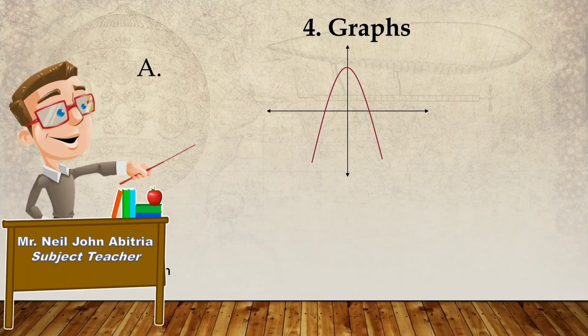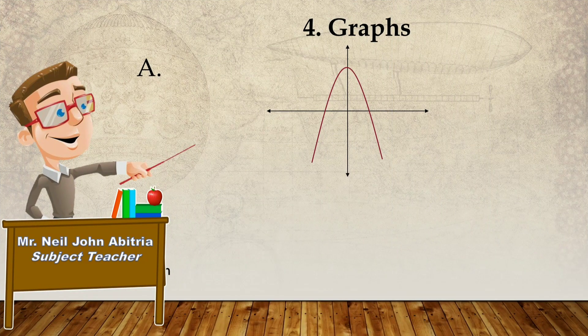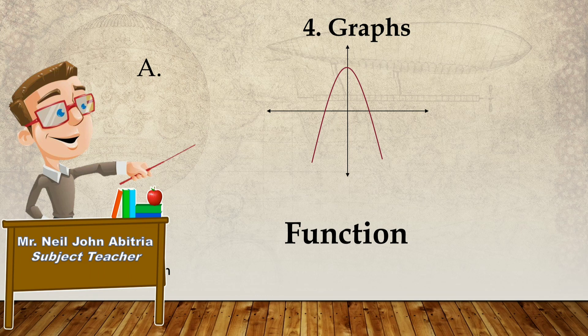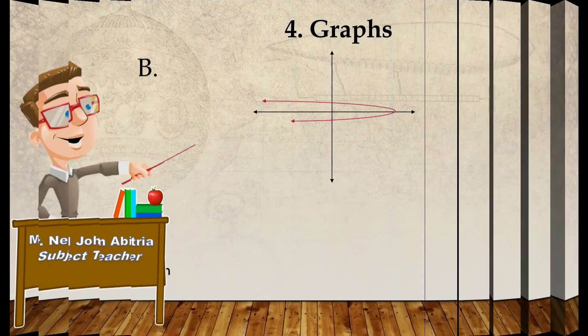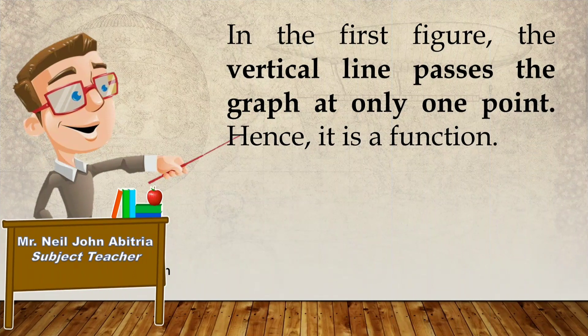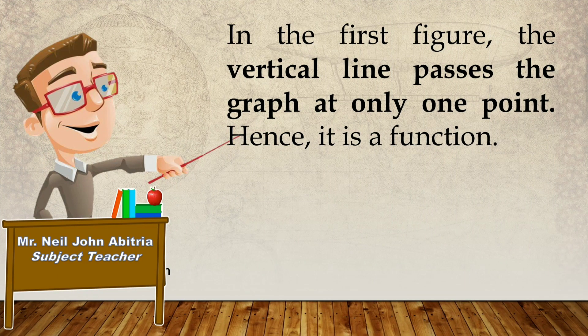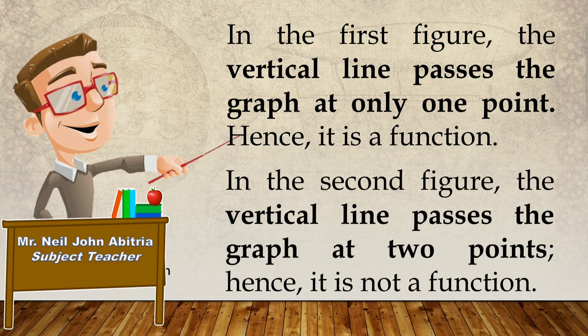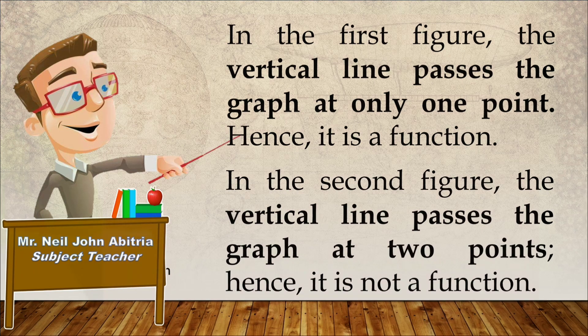So let's try in the graph. So is it a function or mere relation? Yes. This is function. How about this? This is not a function. As you observe in the first figure, the vertical line passes the graph at only one point. So it is a function. In the second figure, the vertical line passes graph at two points. Hence, it is not a function. Did you get it?